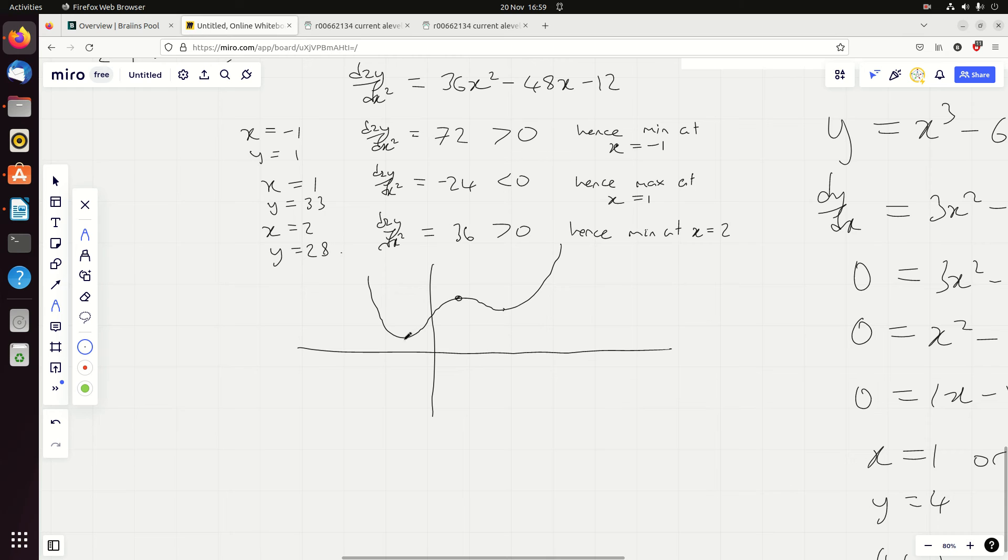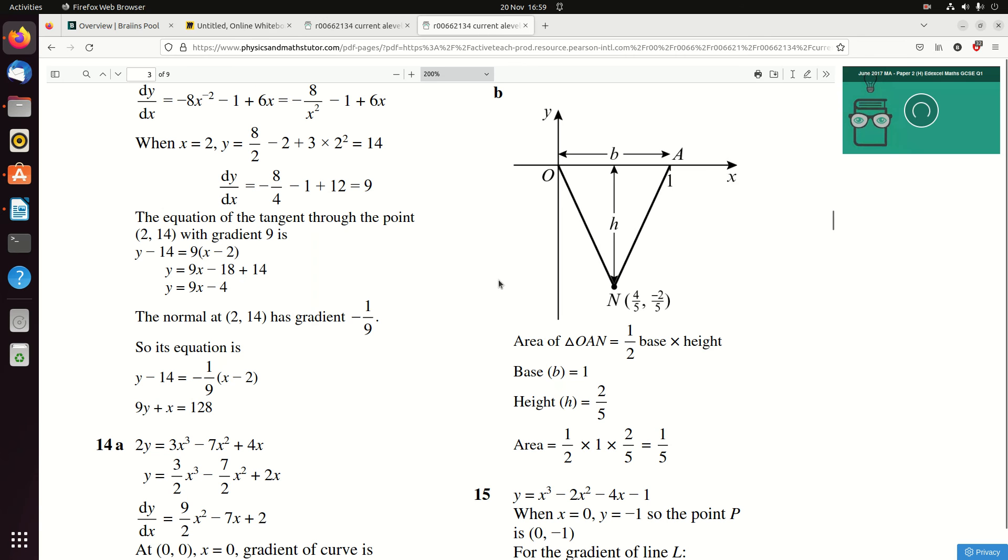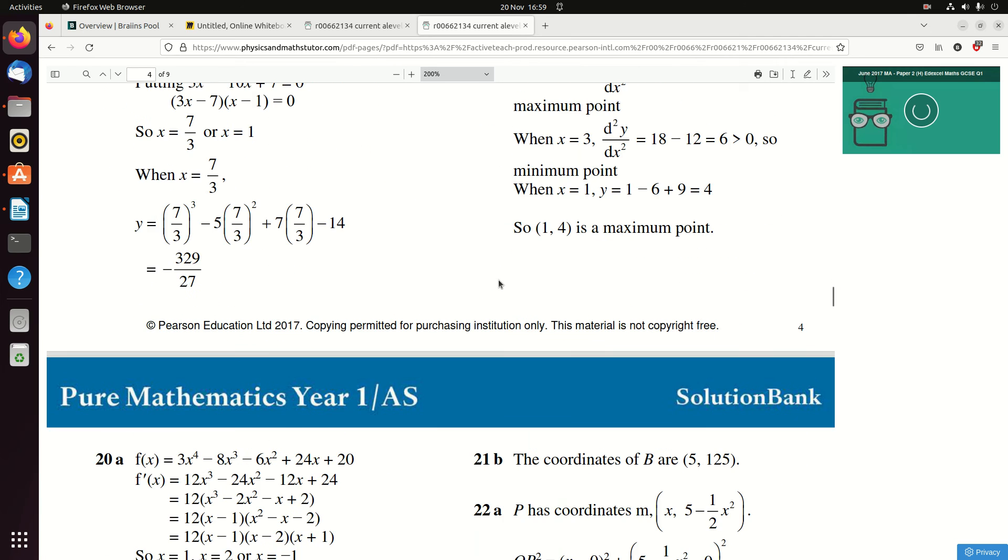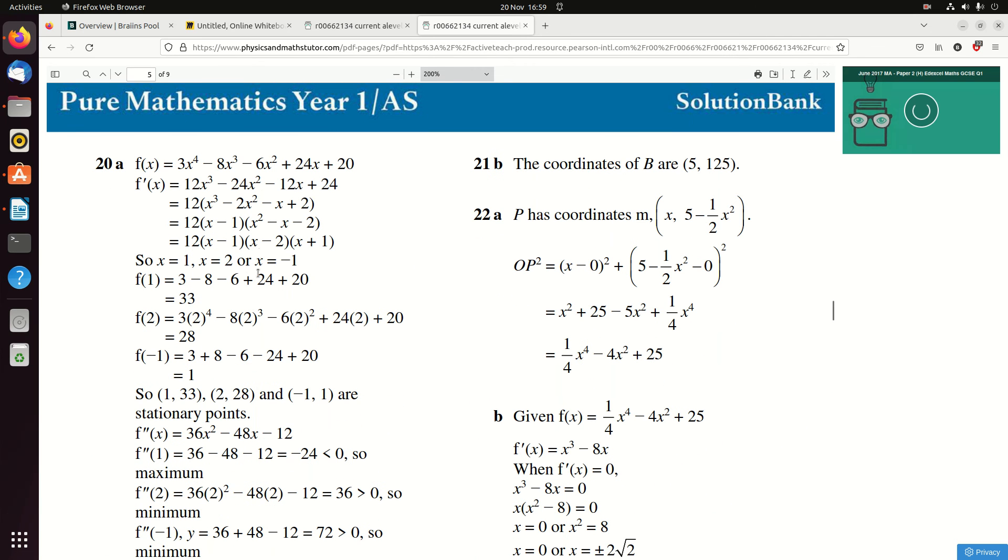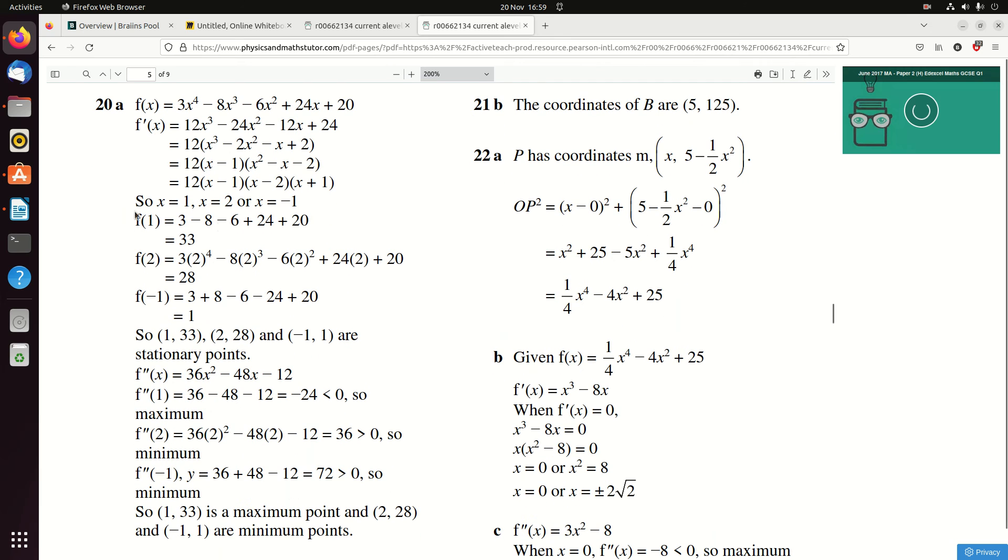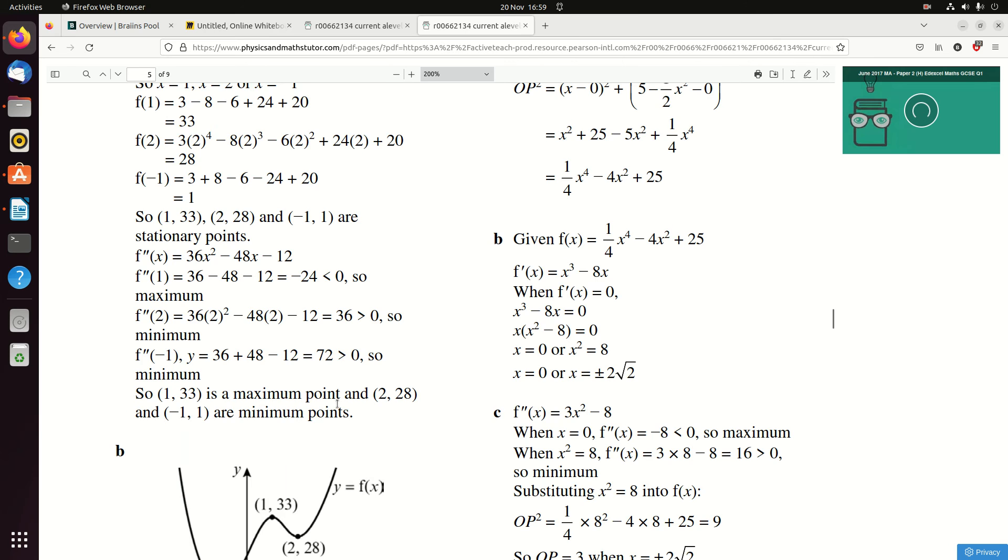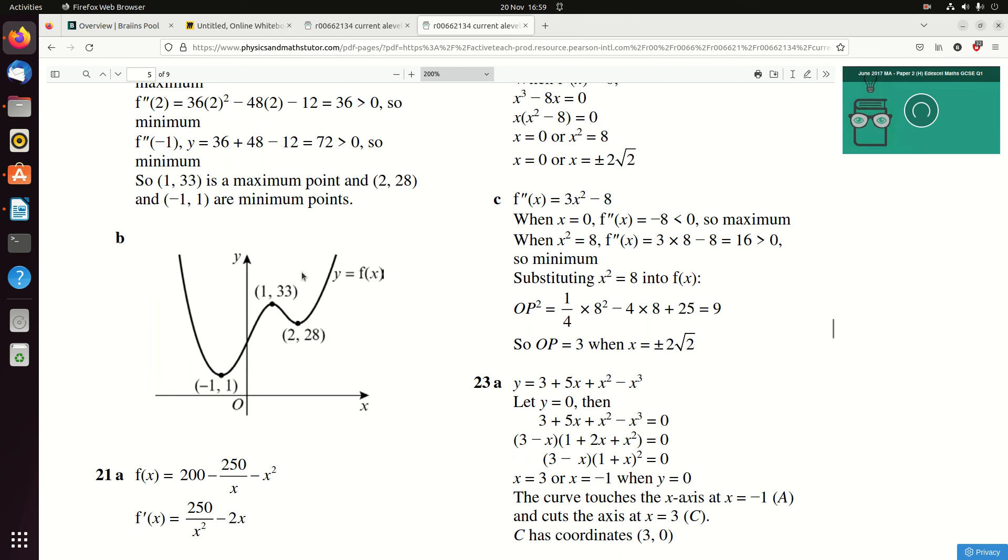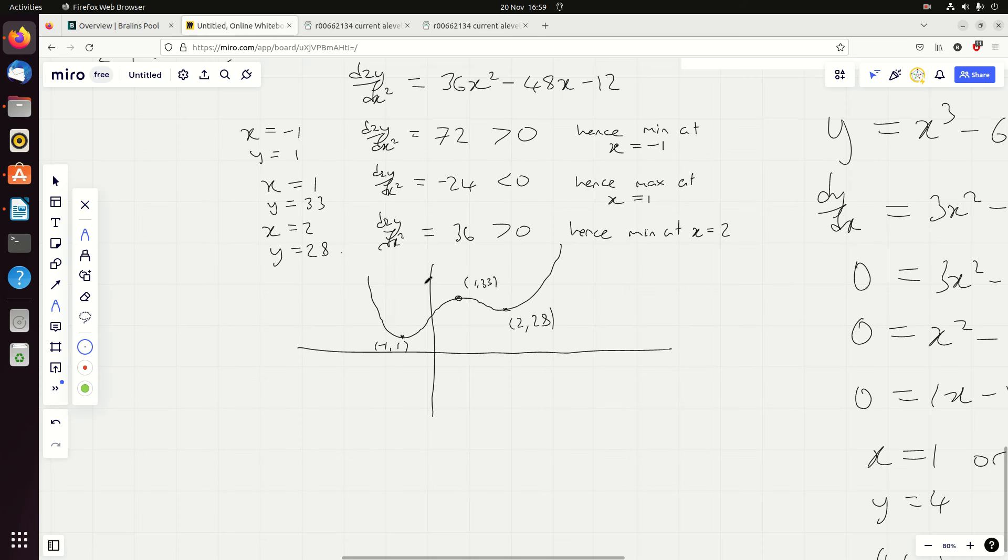And so now we can sketch it. We know it's minus 1, 1; 1, 33; and 2, 28. And that's what it looks like. A lot of people think quartics have to be symmetrical - they don't. They don't have to be symmetrical. That's question 20. I'll give you the link to this. I think I've got those numbers right when I plugged it in. I was expecting that to be wrong, but there we go, we got it right. Happy days.